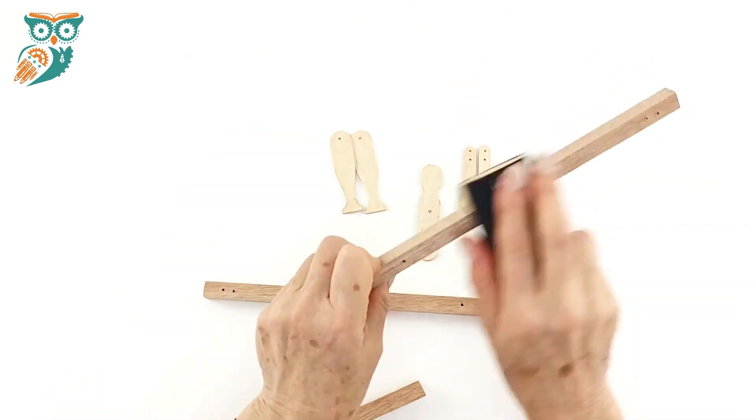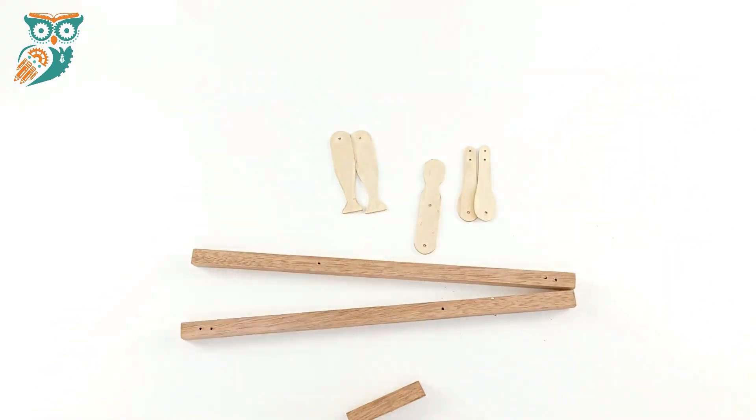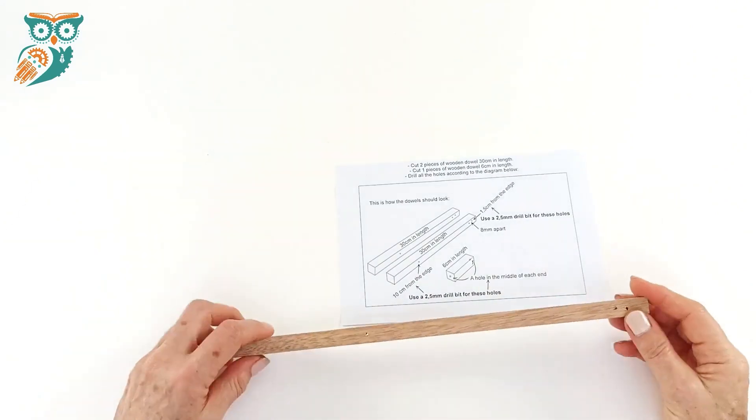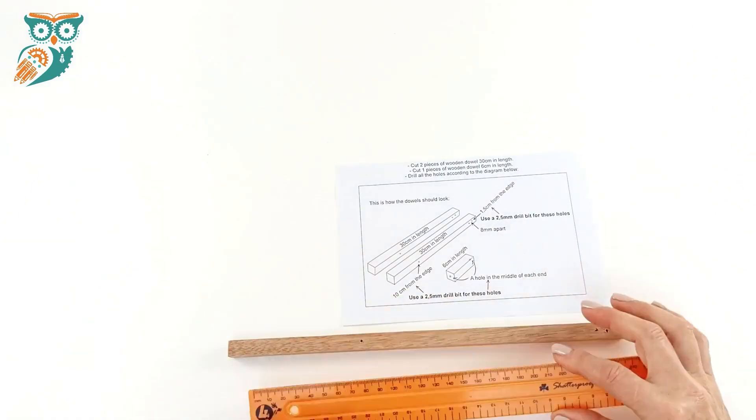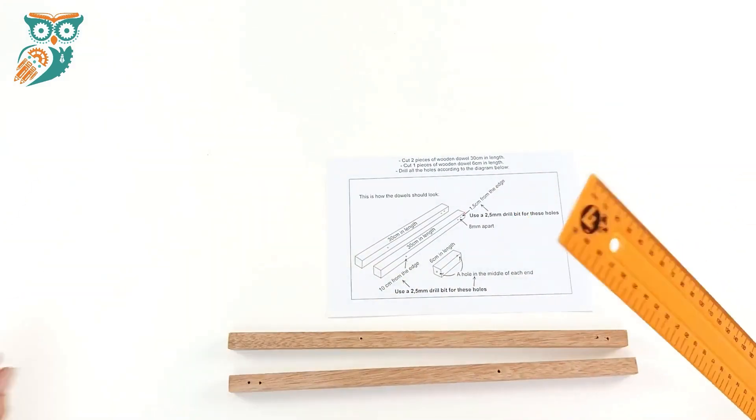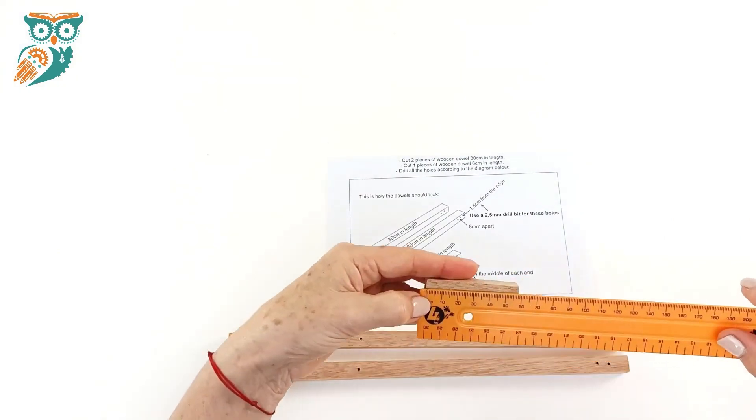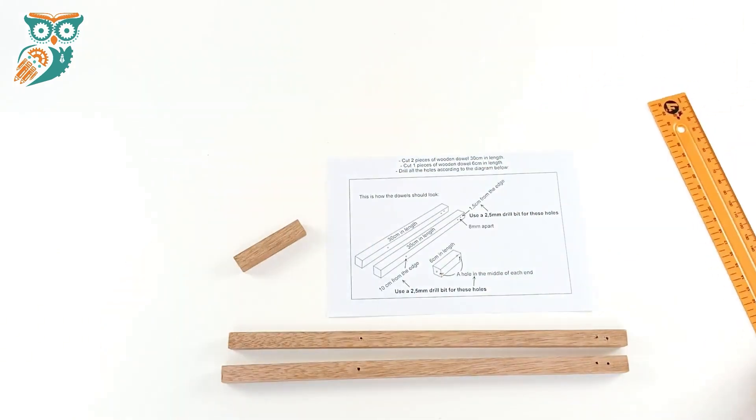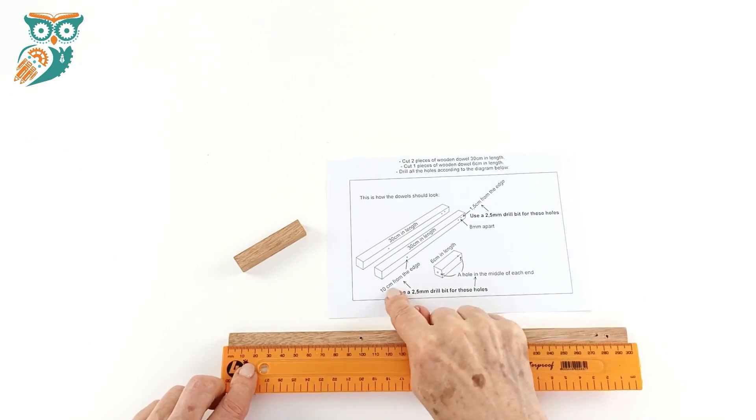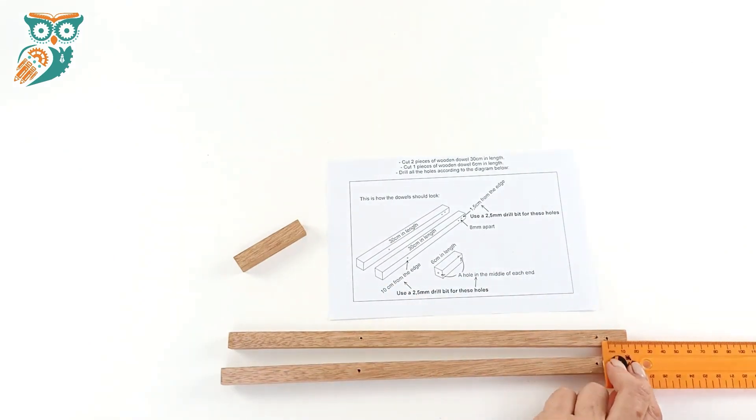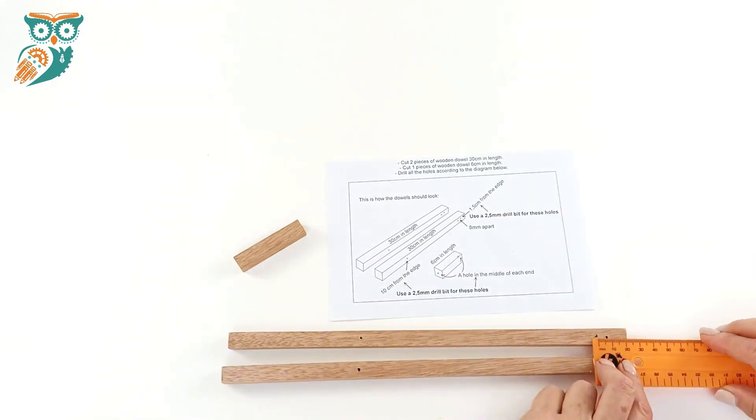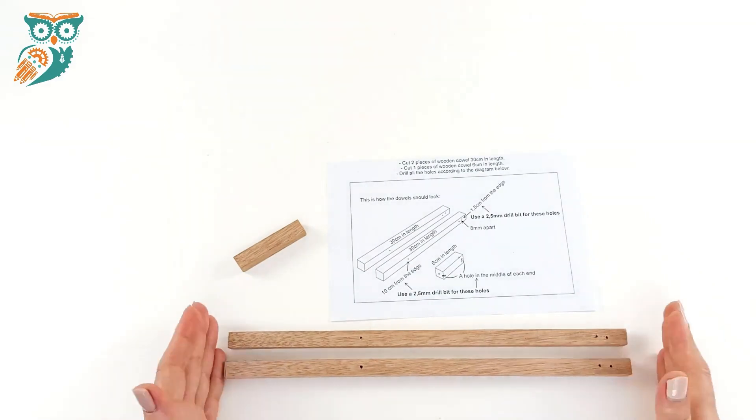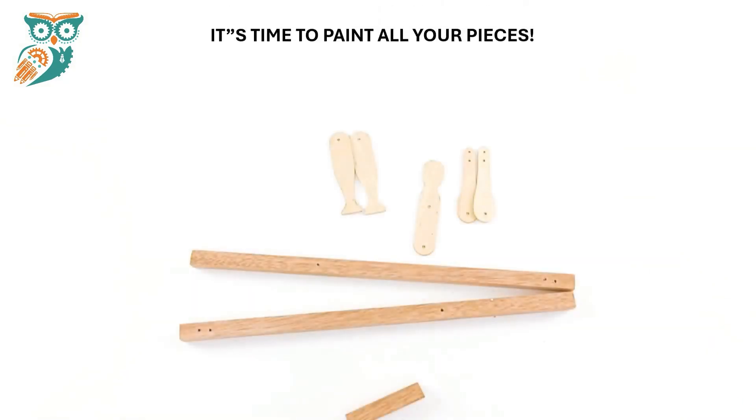We also have three pieces of dowel that are square and have been cut to 30 centimeters for two of them and one to 6 centimeters. In this diagram, which we have on the website as well, we're going to measure out and pre-drill our holes for each piece. We've got our top holes there and then two bottom holes, and then the 6 centimeter piece has a hole on either end.